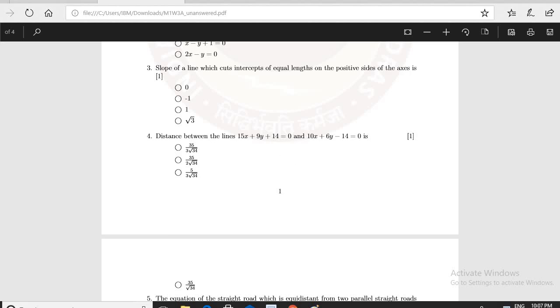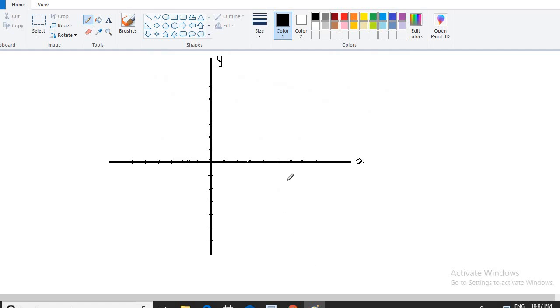So we have to find out what will be the slope of a line when it cuts the intercept at the positive points. Now if you remember the general equation that we have of a line in intercept form is x by a plus y by b, y by b is equal to 1.